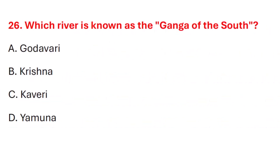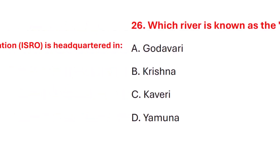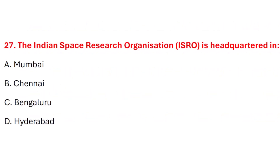Question 26. Which river is known as the Ganga of the South? Correct answer is option C: Kaveri. Question 27. The Indian Space Research Organisation is headquartered in? Correct answer is option C: Bengaluru.